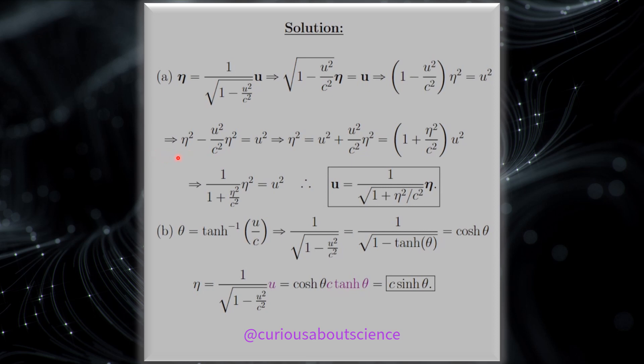Notice that when we square both sides, we have to distribute the eta U squared. Get all the U terms over to the right-hand side. Factor everything out, so now it's eta over C squared instead of U over C squared, and then divide over.